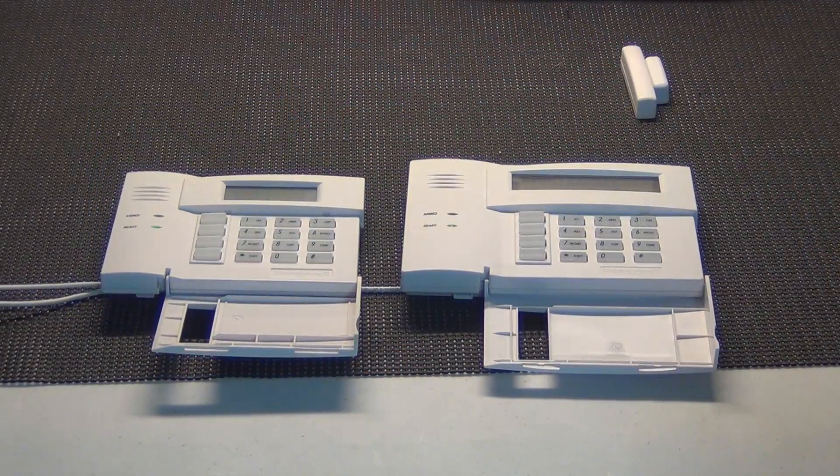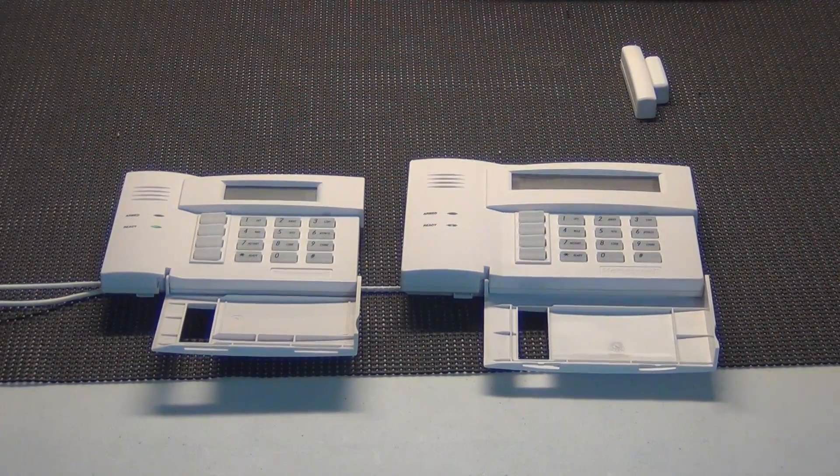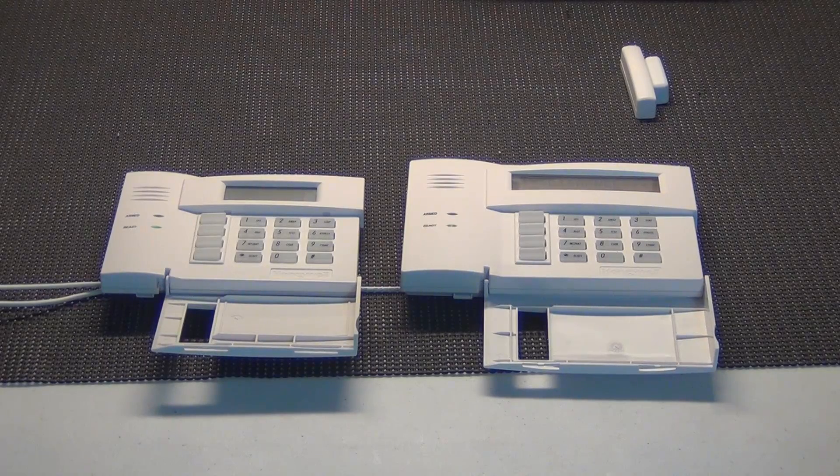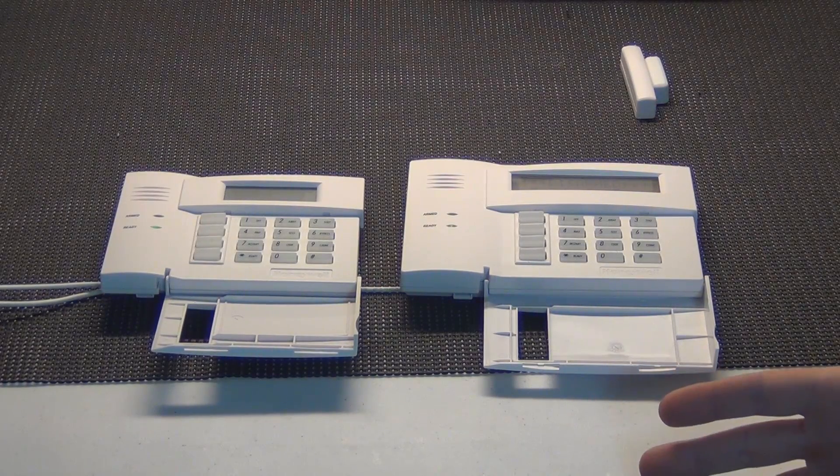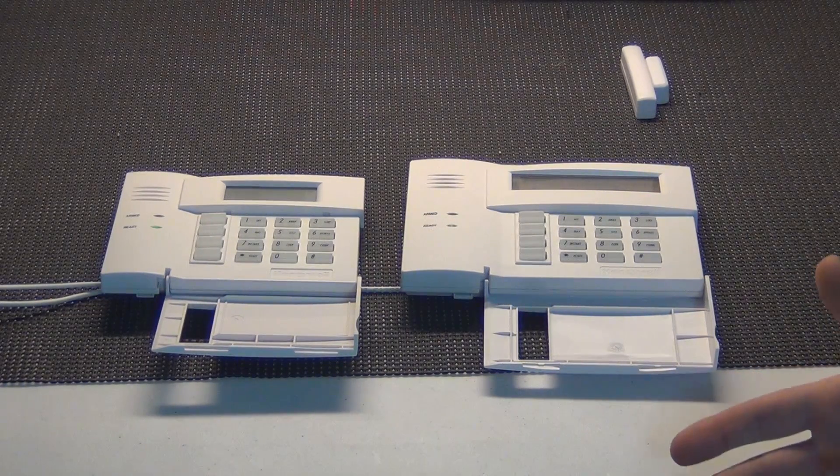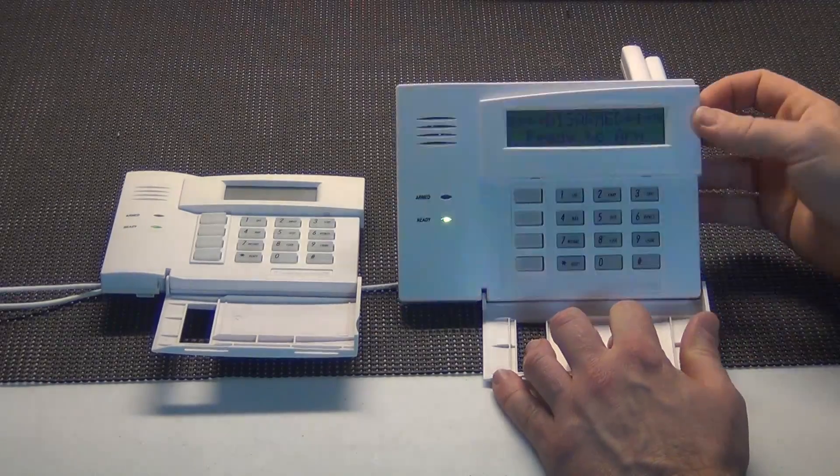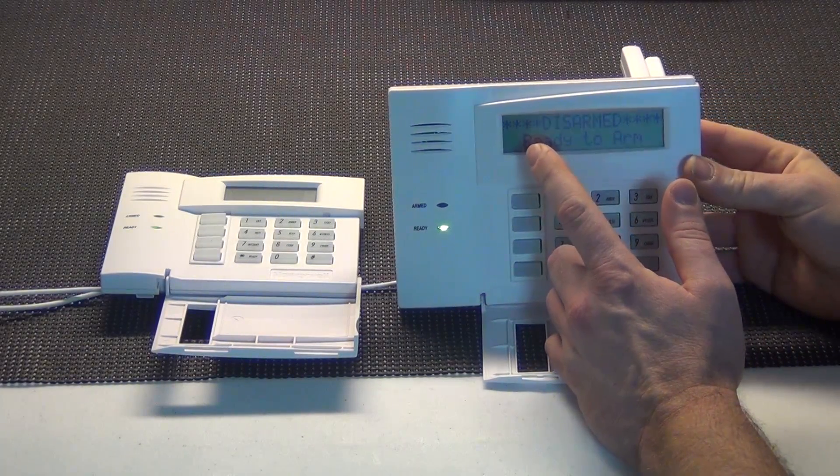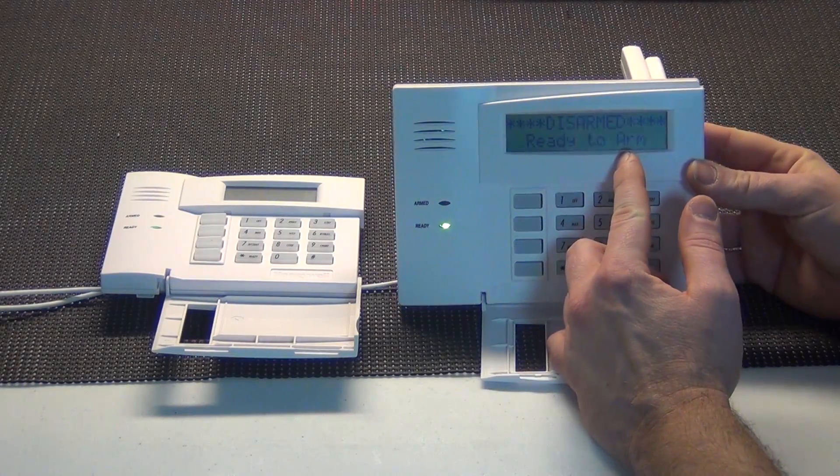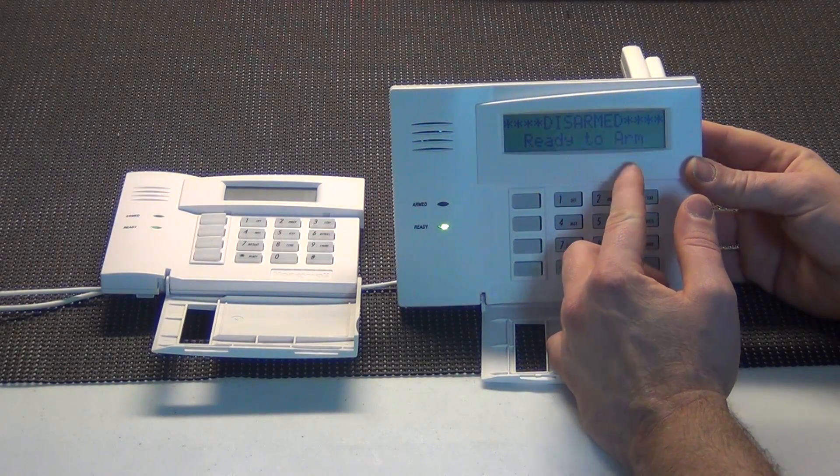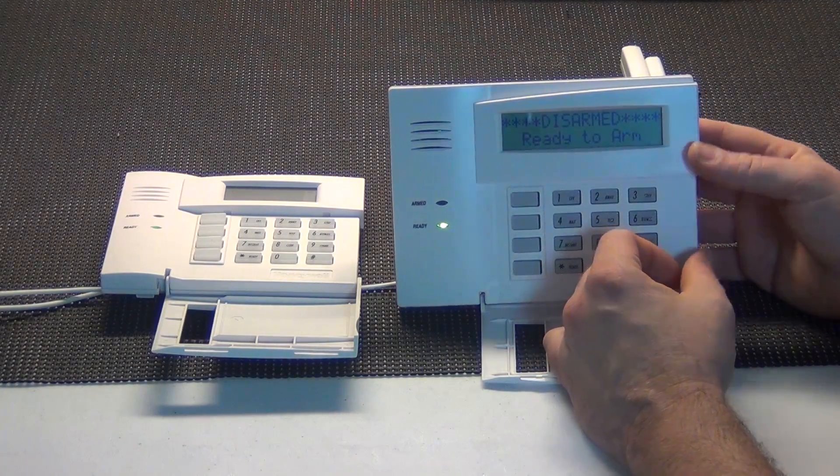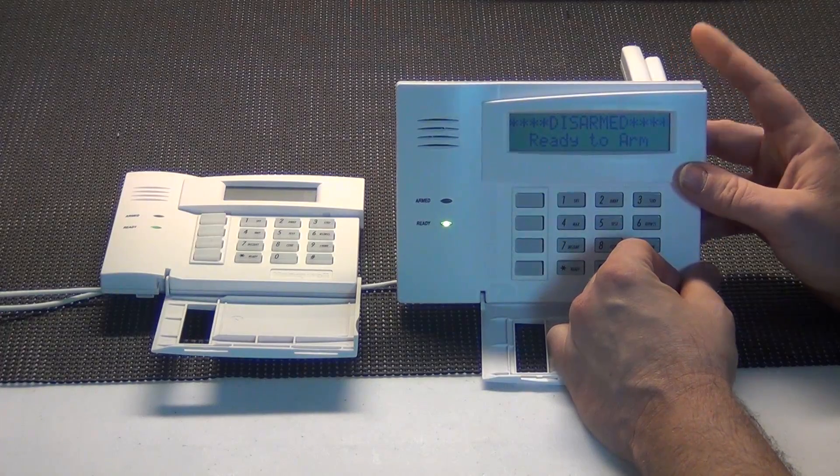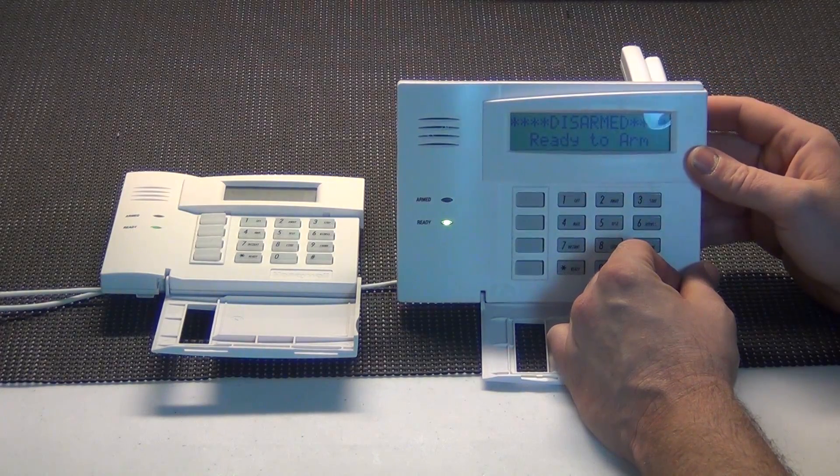There are differences between these two. We get a lot of questions about what are the major differences. The 6160 alphanumeric, as you can see here on the screen, shows you alpha characters and numbers as well. It's a lot easier to program with this one too, because you can see everything in your programming sections.